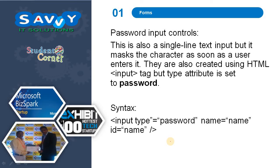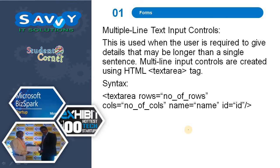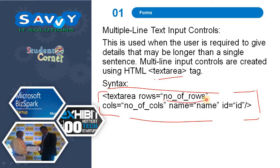For the password input control, this is also a single line text input but it masks the character as soon as a user enters it. It is also created using the HTML input tag, but the type attribute is set to 'password' — previously we used 'text', instead of that we use 'password'. For the multiline text input control, we define it using textarea with rows, number of rows, number of columns, name, and id specified.